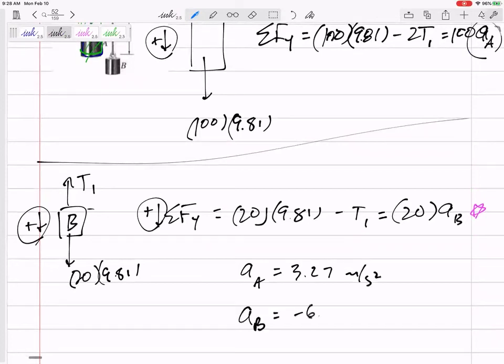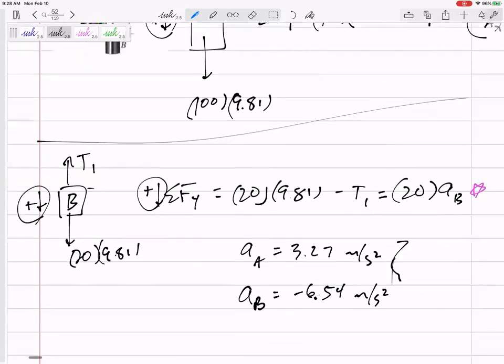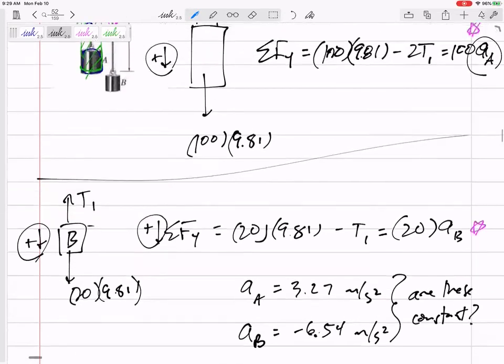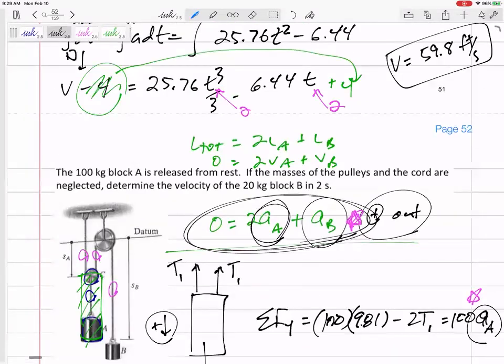The acceleration of B negative 6.54 meters per second squared. What do those positives and negatives mean? We've defined everything as positive out so A is actually going down 3.27, B is going up 6.54 meters per second squared. Here's a question: are these accelerations constant? Well you have to look where they came from.